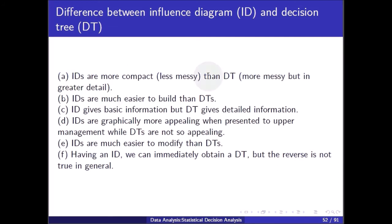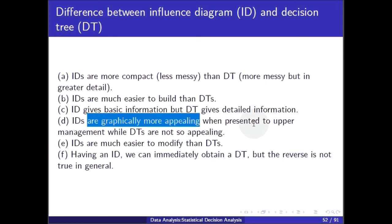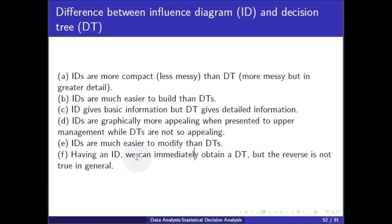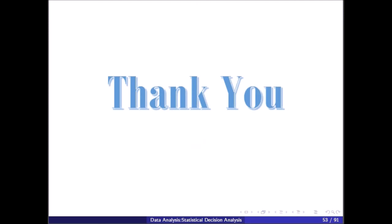Finally, the differences between influence diagrams and decision trees: influence diagrams are more compact and much easier to build than decision trees. Influence diagrams provide basic information while decision trees give detailed information. Influence diagrams are graphically more appealing when presenting to upper management, and are much easier to modify than decision trees. Having an influence diagram, we can immediately obtain a decision tree, but the reverse is not true in general. Thank you very much.